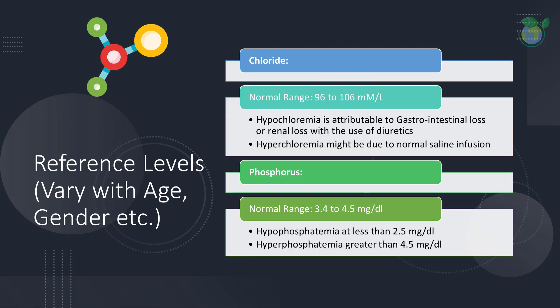Next up, we have serum chloride levels within a typical range of 96 to 106 mmol/L. Hyperchloremia could be due to normal saline infusion, such as through drips during medical interventions, whereas hypochloremia could be attributable to gastrointestinal loss as in diarrhea, or in situations of renal losses with the use of diuretics.